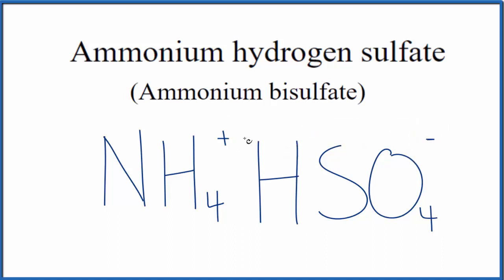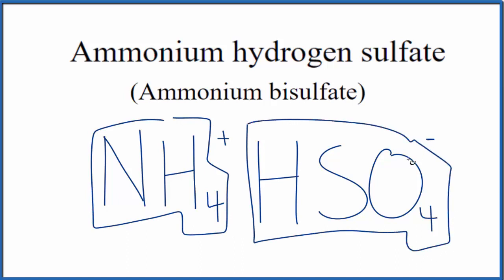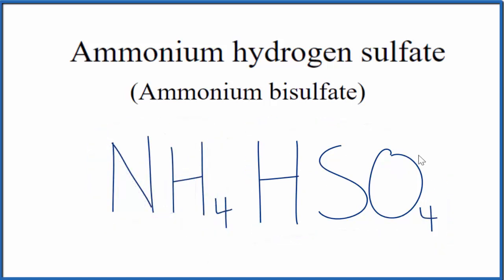So since we have two ions, these charges need to balance. So we know the whole ammonium ion is that positive. We know this hydrogen sulfate, or this bisulfate, that's negative. So these two balance out, and this is the formula for ammonium hydrogen sulfate, also called ammonium bisulfate.